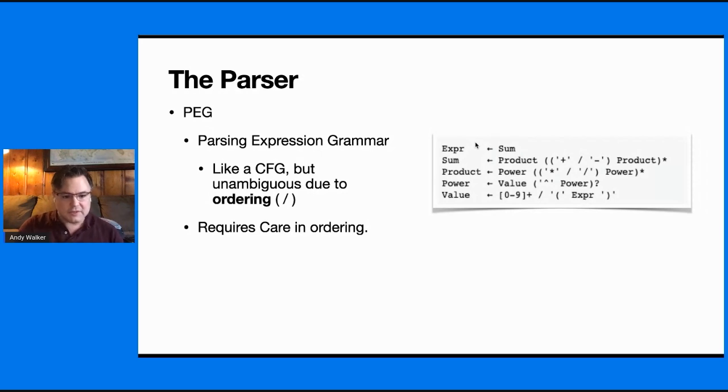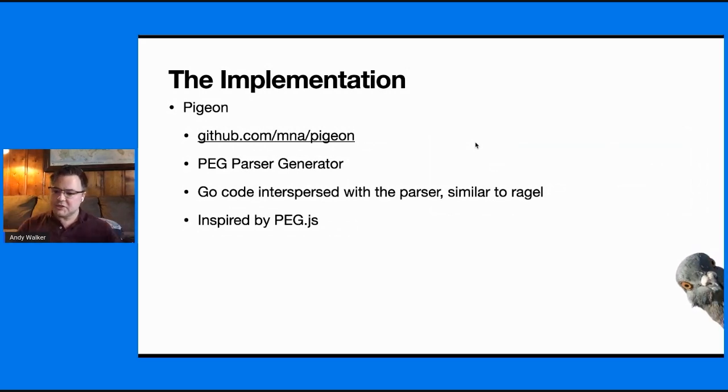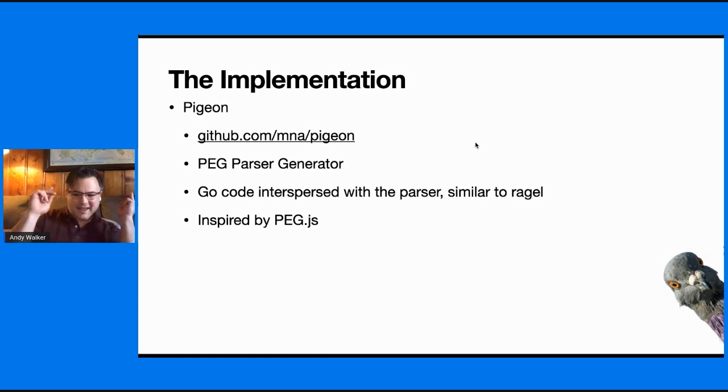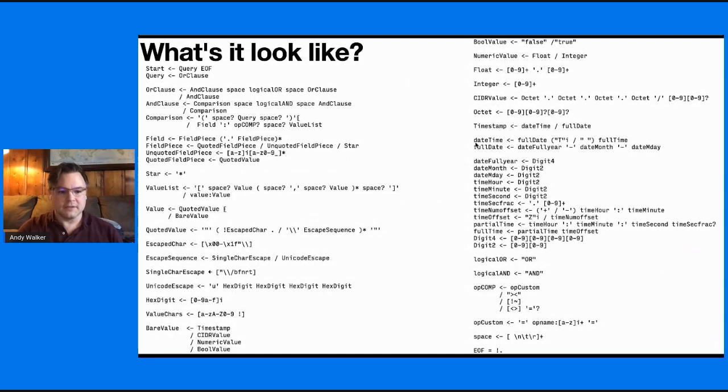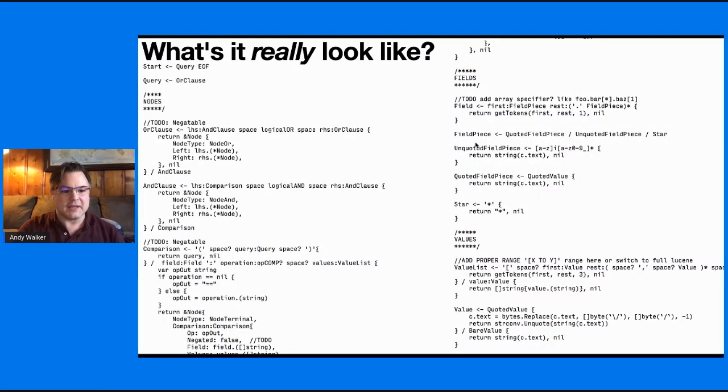So I went with a Parsing Expression Grammar, which is like a context-free grammar, but it's unambiguous. It's selection operator is in order. The first option is tried and then so on and so forth. But it requires care in ordering because of that priority. So I went with Pigeon, which is a Go library. And it is a parsing expression grammar parser generator in Go.